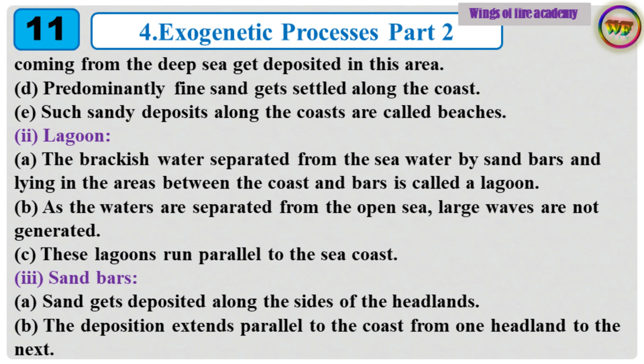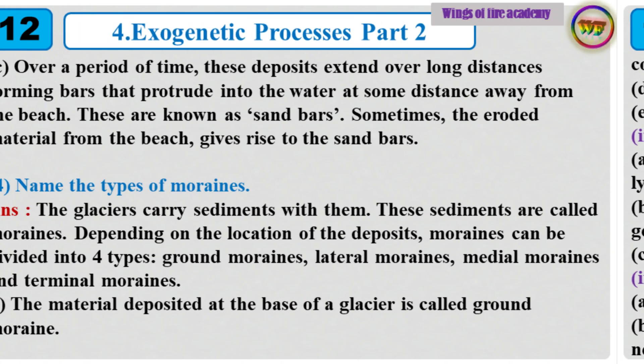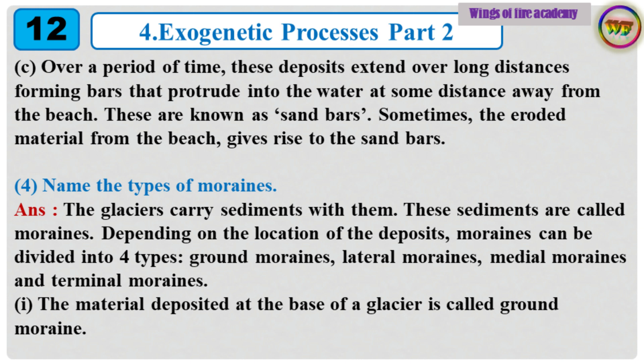2. Lagoon: The brackish water separated from the seawater by sandbars and lying in the areas between the coast and bars is called a lagoon. As the waters are separated from the open sea, large waves are not generated. These lagoons run parallel to the seacoast. 3. Sandbars: Sand gets deposited along the sides of the headlands. The deposition extends parallel to the coast from one headland to the next. Over a period of time, these deposits extend over long distances forming bars that protrude into the water at some distance from the beach. These are known as sandbars. Sometimes, the eroded material from the beach gives rise to sandbars.